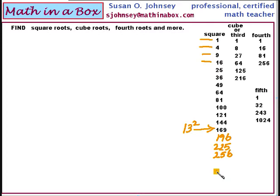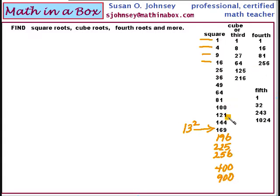20 squared is 400. 30 squared is 900. So you need to put these in your good memory bank, in your head. Also, for your cube list, you need to write it out.